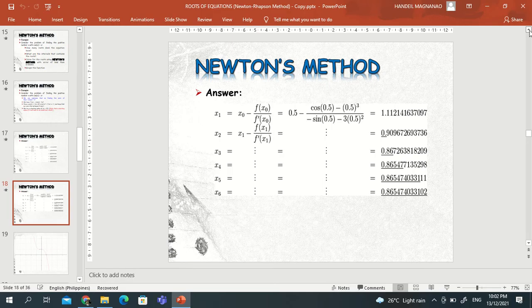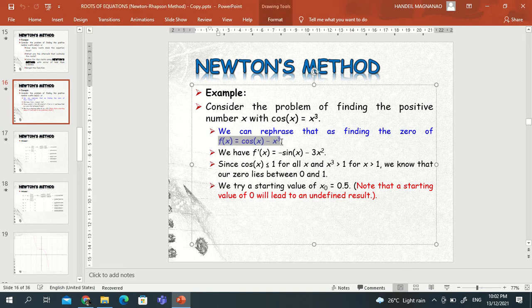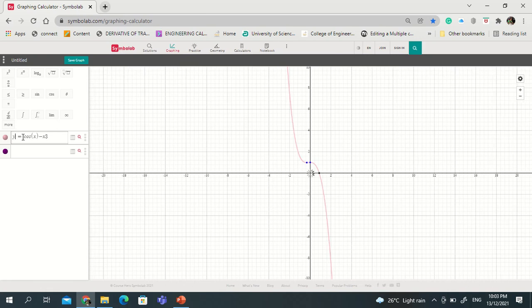And now we will graph this given function. So our given function is this one, f of x. So this is what we are going to graph, so you just copy this and we'll go to this link and paste this. Okay, but we need to change this f of x, you change this to y, and then here's the graph.